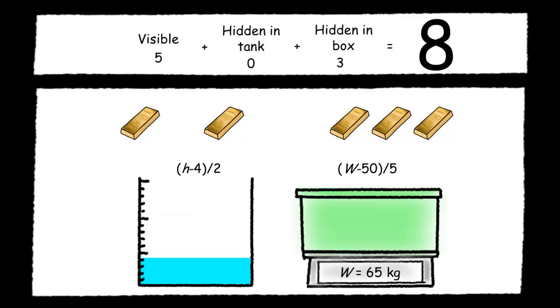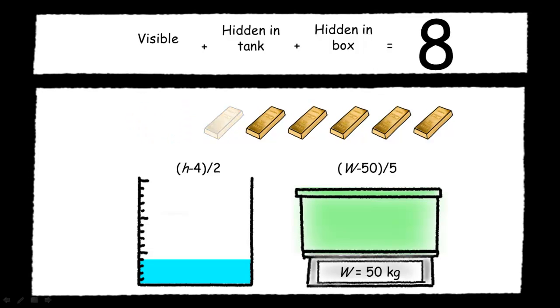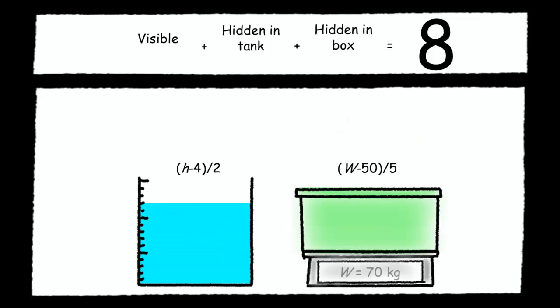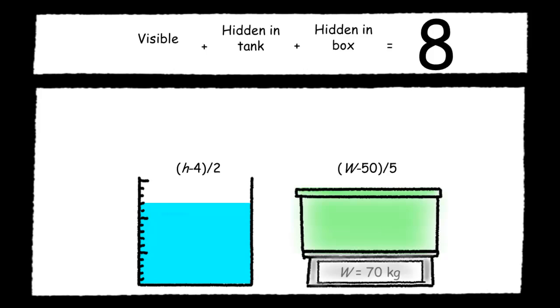There is however one crucial difference between this analogy and real physics. In real physics, there are no gold bars. I mean, in real physics, all the gold bars are always hidden. The number of gold bars that are visible is always zero.